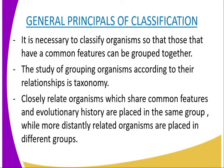Modern classification is mainly based on structural similarities and differences. Closely related organisms which share common features and evolutionary history are placed in the same group, while more distantly related organisms are placed in different groups. Based on these similarities and differences, organisms are placed in seven major taxonomic units.